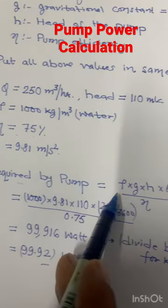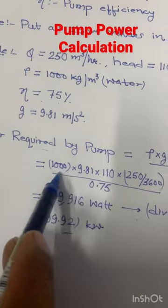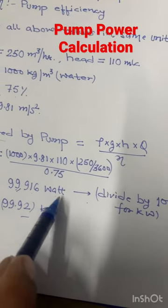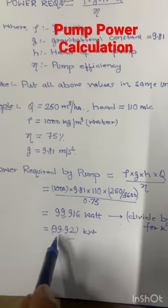We will get power requirement by the pump in watts. If we divide the watts by 1000, we will get power requirement in kilowatts.